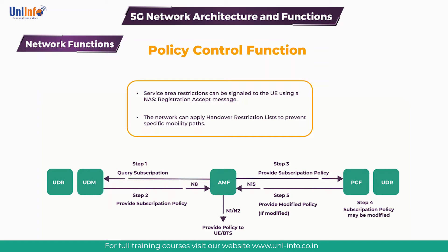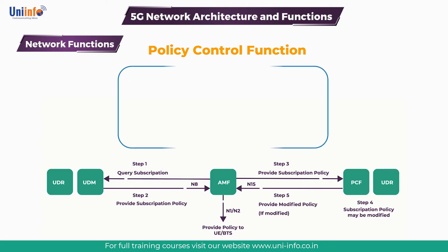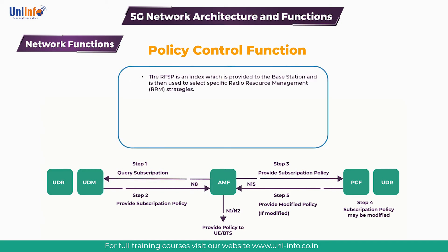It is also applicable to the RAT or frequency selection priority. The RFSP is an index which is provided to the base station and is then used to select specific radio resource management strategies. For example, the RFSP can be used to determine the set of cell reselection priorities provided to a UE.